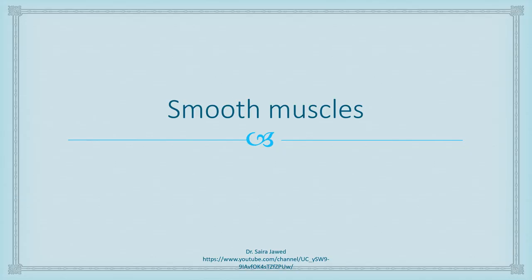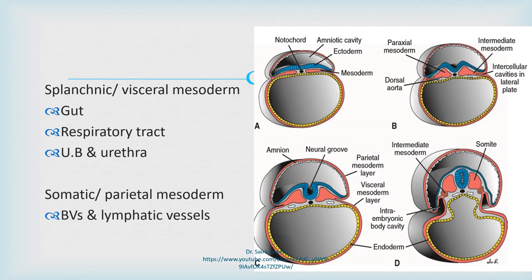The visceral mesoderm, also known as splanchnic mesoderm, gives rise to the smooth muscles in the digestive system, the smooth muscles in the respiratory tract, and the smooth muscles present in the urinary bladder and urethra. From the parietal mesoderm, also known as somatic mesoderm, smooth muscles of blood vessels and lymphatic vessels arise.